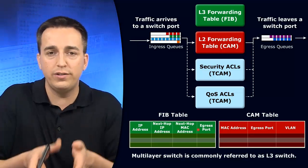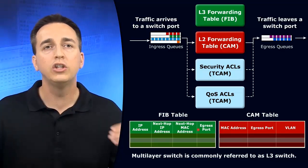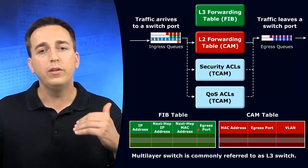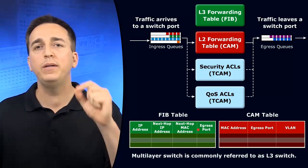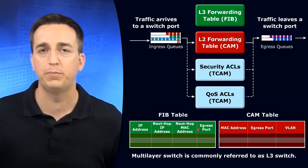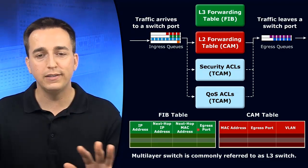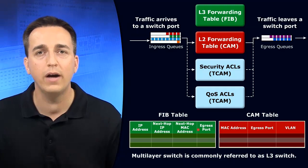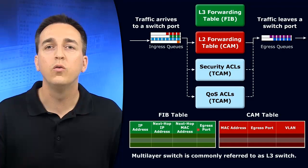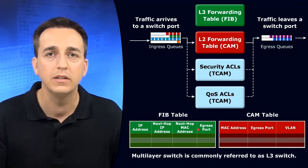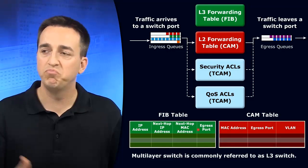All of this information is down at the hardware layer — it's in our application-specific integrated circuits. That way, the processor, the CPU, and RAM don't have to be referenced. We don't have to perform slow lookups using the CPU. We have these circuits down in hardware at the interface level that can quickly and efficiently determine what to do with the frames and packets that need to be processed.